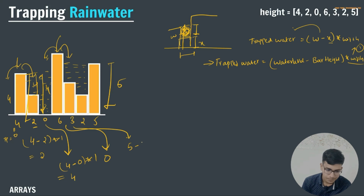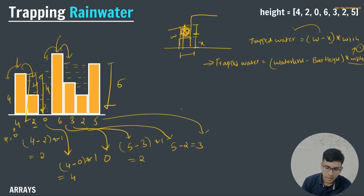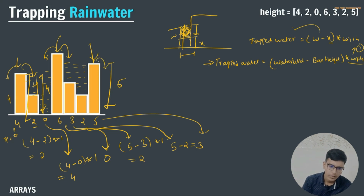This is the formula extracted from the three-bar case: water level = min(left boundary, right boundary). Now let us expand this for n bars. The total water trapped = 0 + 2 + 4 + 0 + 2 + 3 + 0 = 6 + 5 = 11. So the total amount of water trapped in between the given bars for this example is 11.